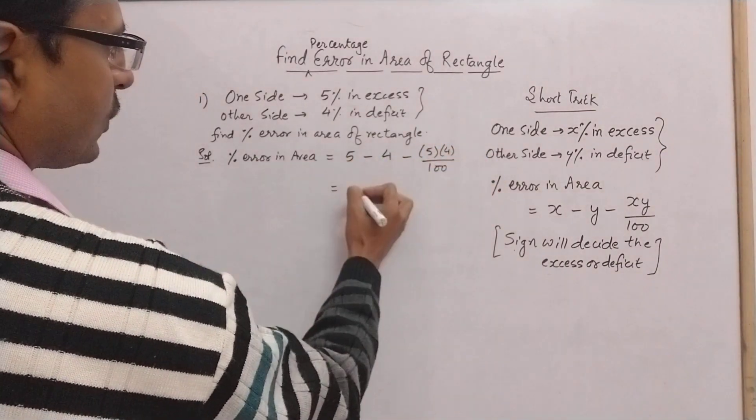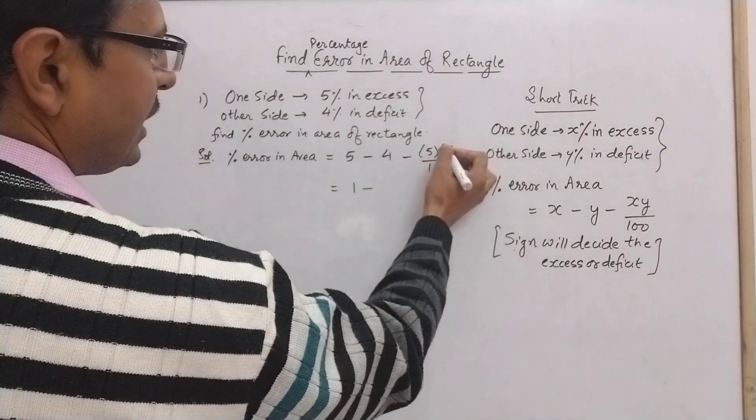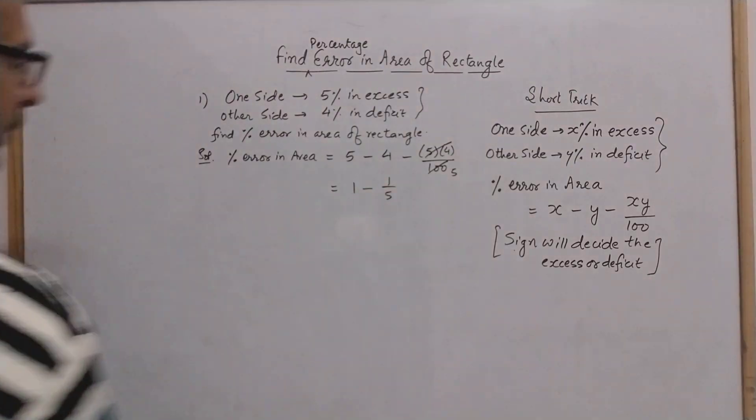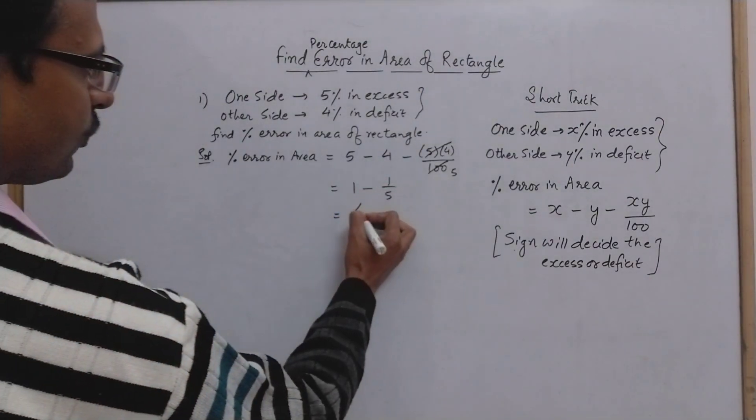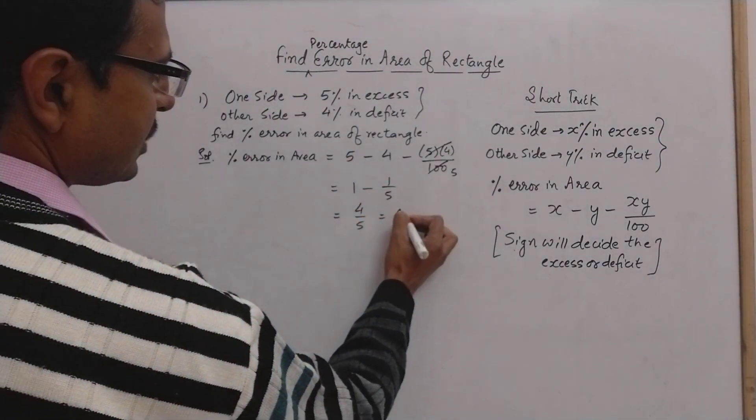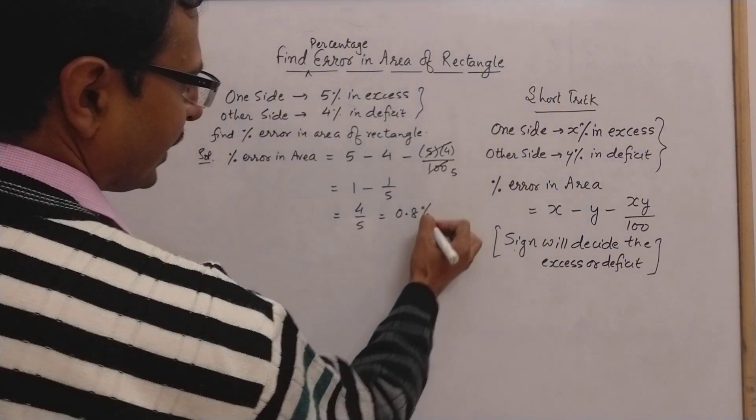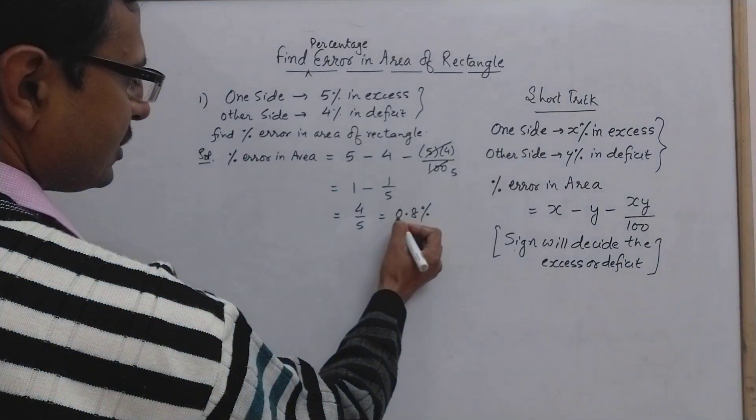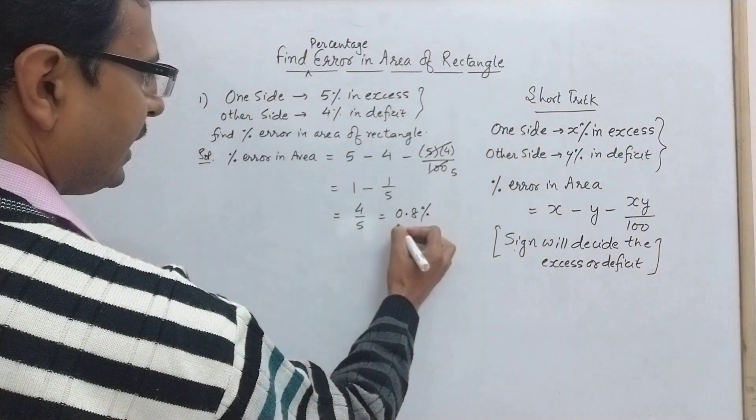This is 5 minus 4 is 1, minus 5 times 4 is 20, so 20 cancels out 5 times, so this is 1 by 5. So 1 minus 1 by 5 is 4 by 5 or this is 0.8 percent. The sign here is positive.